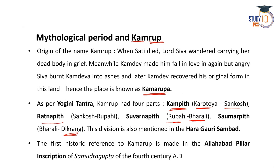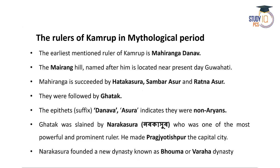In ancient times as per the Yogini Tantra, Kamrup extended from the Karatoya River up to the Dikrong River in present-day Lakhimpur. Please remember the four divisions: Kampith, Ratnapith, Swarnapith, and Homar Pith. This division is also mentioned in the Haragauri Sambad. The first historic reference to Kamrup is made in the Allahabad Pillar Inscription of Samudragupta, a powerful North Indian ruler of the 4th century.